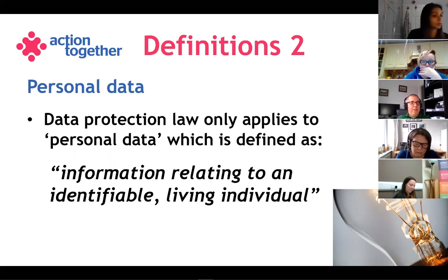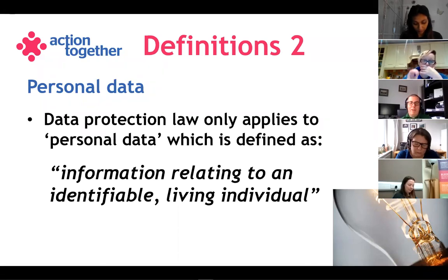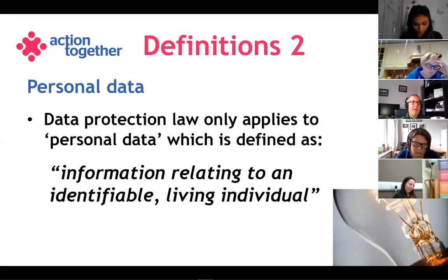This is the first data protection definition and it's at the key of everything: personal data. This is what is covered by GDPR and the Data Protection Act, and it is defined as information relating to an identifiable living individual. There are three tests: Can somebody be identified? Are they alive? Does the data relate to them — not 'is it about them' but 'does it relate to them'?